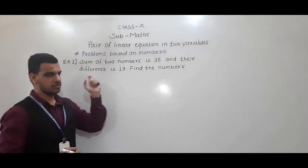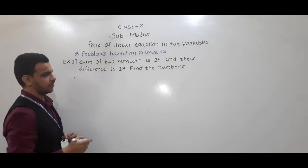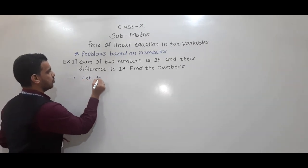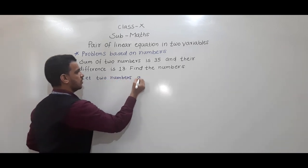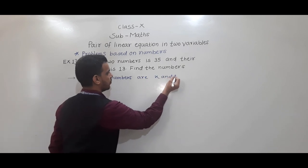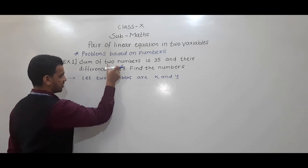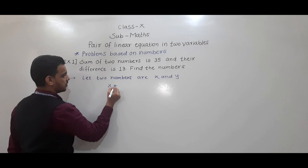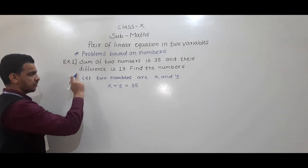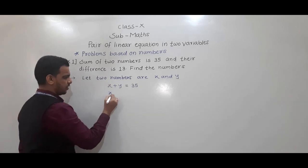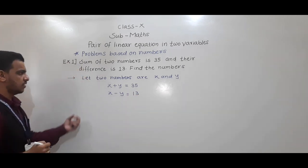So this one is easy. We have to suppose that two numbers are x and y. So let two numbers be x and y. Sum of two numbers is 35, so by using this condition we can write equation 1 as x plus y is equal to 35. And their difference is 13, and assuming x is greater than y, so x minus y is equal to 13.